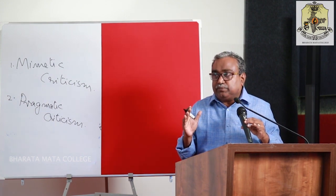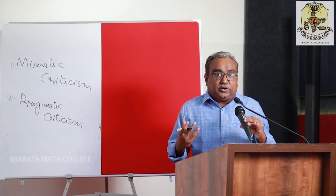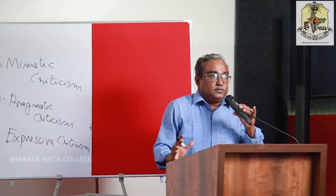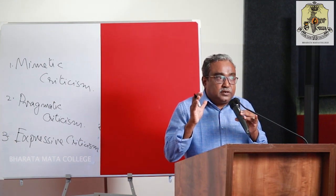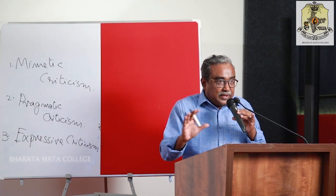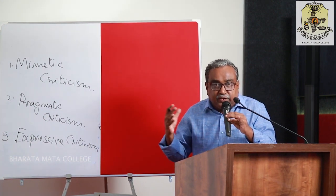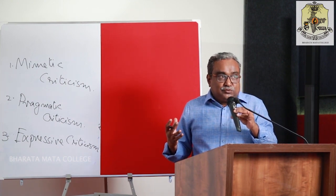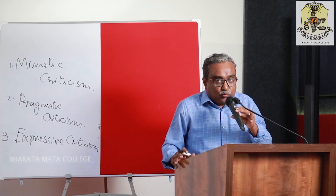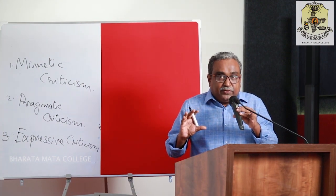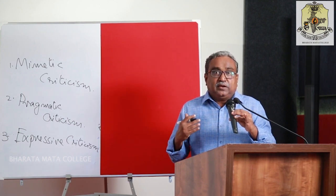The third one is expressive criticism, where the author is important — the dramatist, the playwright, the artist. The last one is objective criticism, where the work is given importance and other factors are not taken into consideration when analyzing poetry. This brings in the importance of I.A. Richards and the practical criticism he formulated and popularized, published as a book in 1924, which is crucial in giving training to students in practical criticism. These are the four kinds of criticism in the general introduction.